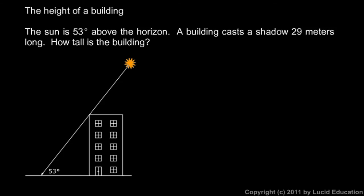So let's look at the first example, the height of a building. In this problem we're told the sun is 53 degrees above the horizon. Now the sun here is really much farther away in this direction, but what we see here is a ray of light from the sun coming in right there, striking the ground at this point, so the shadow of the building is right here. And we're told a building casts a shadow 29 meters long, so this distance from here to here is 29 meters.